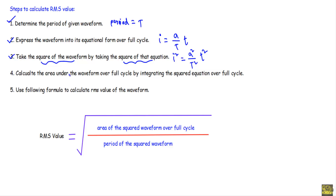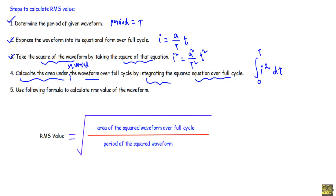After that I will calculate the area under the squared waveform over the full cycle. The RMS value uses the area of the squared waveform over a full cycle, so we calculate this by integrating the squared equation over the full cycle. The integration from zero to T of i² dt gives the area under the squared waveform over the full cycle.